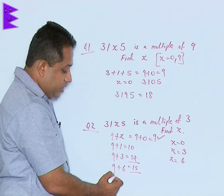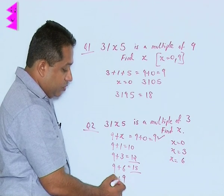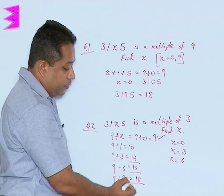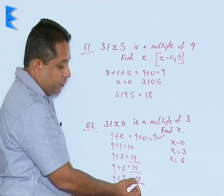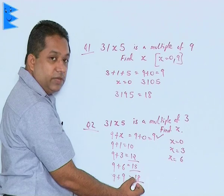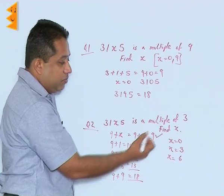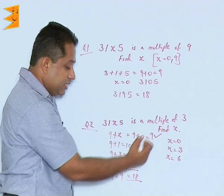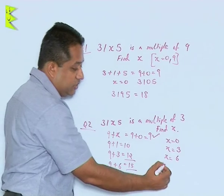So here the next value we will take is 9. So 9 plus 9 is 18. So we know that 18, 3 goes 6 times. So 18 is a multiple of 3. So here we can say that x value is 9.